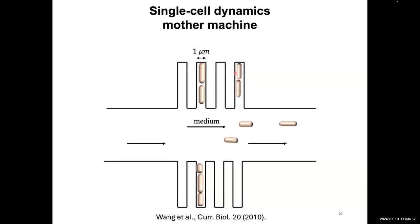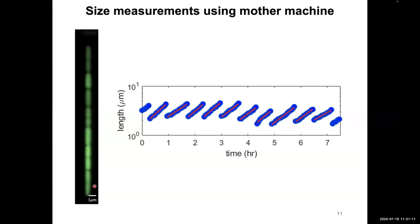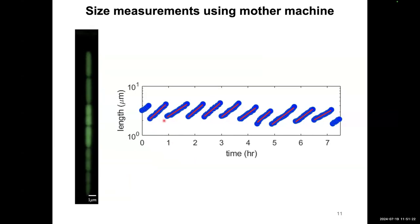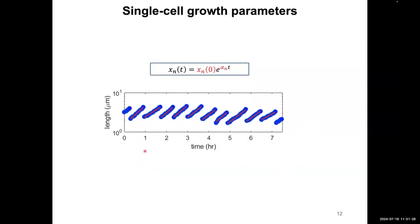It's called the mother machine because the cell trapped at the end is the mother cell that creates the daughters. We can follow each cell for multiple generations, measure its length over time, and plot that versus time on a log axis. Each generation corresponds to the cell growing and then dividing. We can fit each generation to a line, showing that growth is exponential.